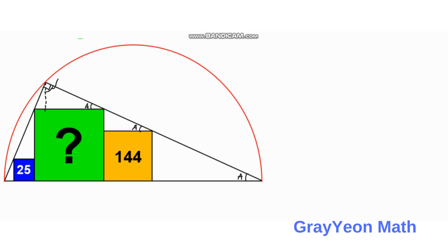Then we draw a line here and label this as angle B. We note that this should be a right angle, and A and B together should sum to 90 degrees. Since this angle is a right angle, if this is B, then the remaining angle is 90 minus B, which equals A. So this angle here should also equal A.